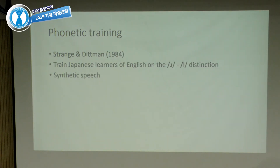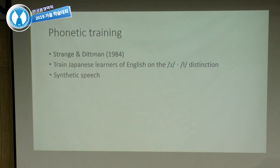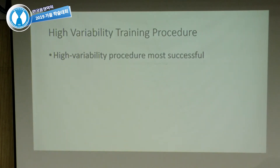This is how we arrive at the notion of phonetic training. An early classic was a study by Strange and Dittman, who tried to teach Japanese learners of English the R-L distinction in English, notoriously difficult for native speakers of Japanese. They used synthetic speech, identification and discrimination paradigms, and trained participants for weeks. Some got slightly better; many never improved. Even those who improved didn't generalize to new speakers. So the idea of phonetic training was temporarily abandoned — it didn't seem to work.